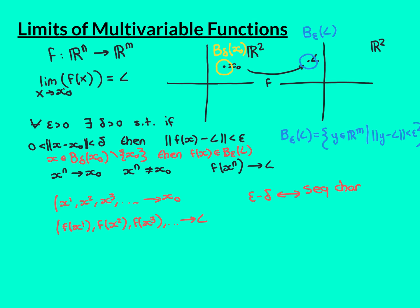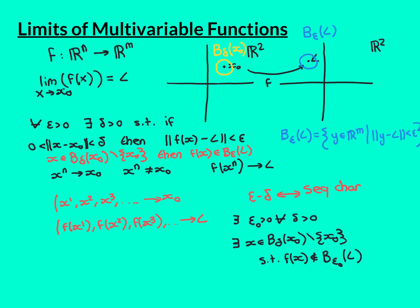By contradiction then: assume the epsilon-delta definition isn't true. That means it isn't the case that for all epsilon greater than 0 there exists a delta greater than 0 such that points in the deleted delta ball around x0 are mapped into the epsilon ball around L. This means there is some specific epsilon — call it epsilon-zero — where whatever delta you take, this is not true. We can use that to build a domain sequence converging to x0 where the image sequence does not converge to L.